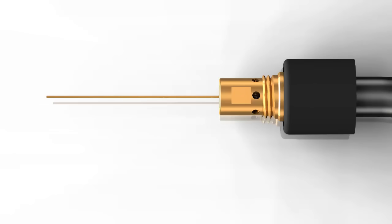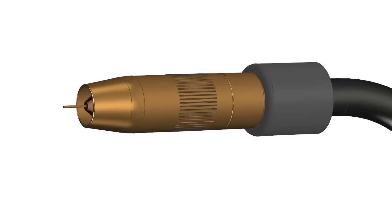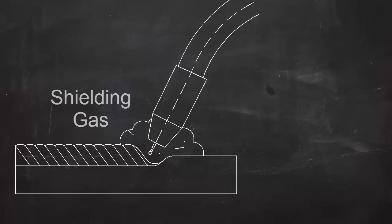Shielding gas is also fed through the welding lead. It goes through a gas diffuser and flows out of the nozzle. This shielding gas, which is often a mix of argon and CO2, protects the molten metal from reacting with oxygen, water vapor, and other things in the atmosphere.